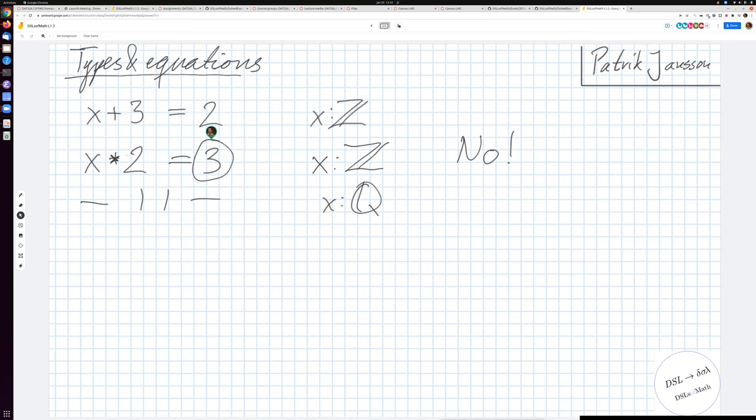So we cannot solve that equation with that typing. We need to extend our numbering system again. We change the type. So if we take the same equation and change the type to saying x is a rational number, then suddenly we do have a solution. Then we have the solution x equals three halves.